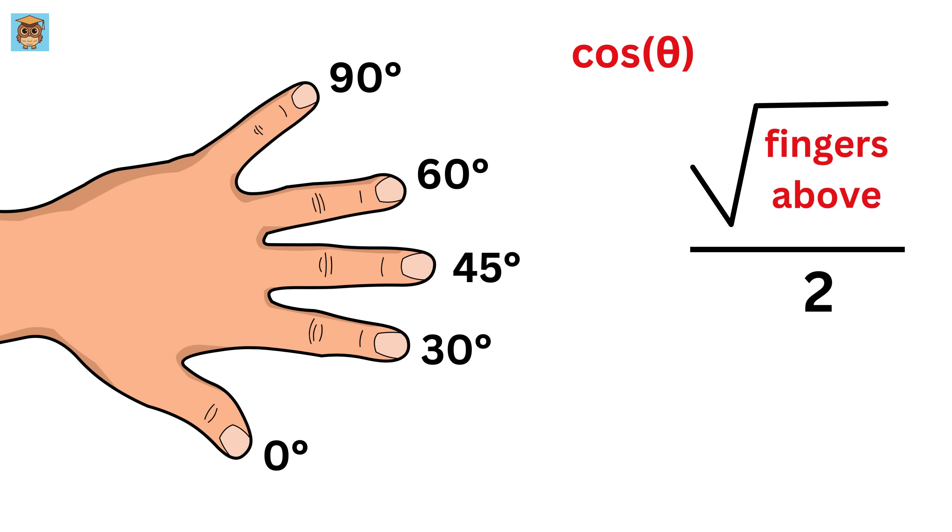For example, let us find the value of cos of 30 degrees. This is 30 degrees. So, the number of fingers above it is 1, 2, and this, which means 3 fingers. Thus, cos of 30 degrees will be the square root of 3, divided by 2. And we are done. Awesome!